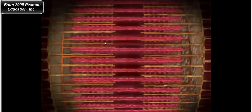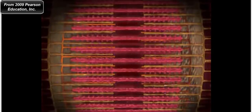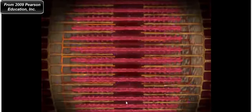Actin must bind to myosin — in order for a cross-bridge to form in the sarcomere, myosin has to bind to actin at the myosin binding site on actin. The actin filaments move toward the M line — the middle line of the sarcomere. The sarcomere shortens toward this line, and myosin heads attach to the thin filaments and walk them toward the M line.